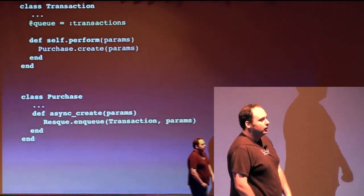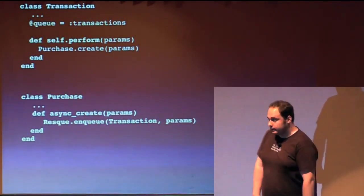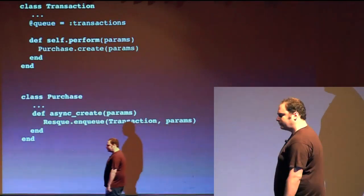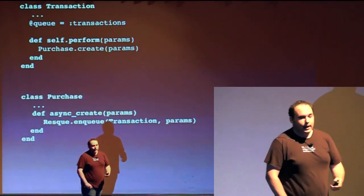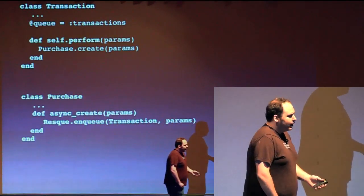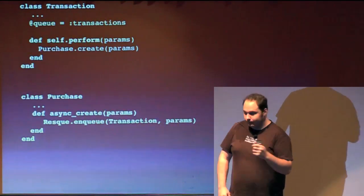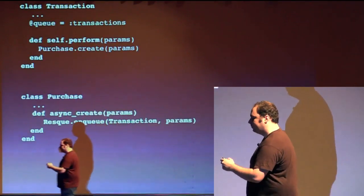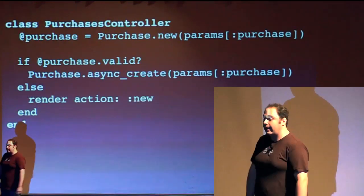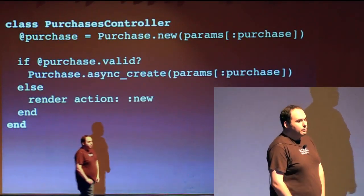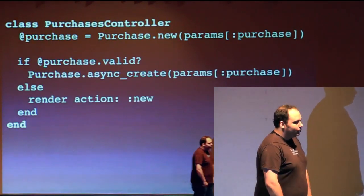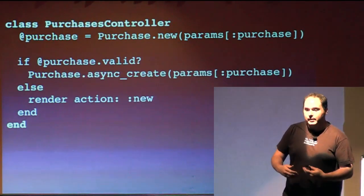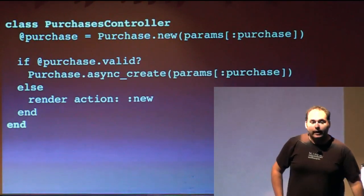We're looking at an example of a model that has an asynchronous create that we can start to enqueue things into and run jobs on top of. In our transaction, we specify the queue we want. And we have a self.perform method that the worker will actually run and do what we wanted to do. In our model, I've added an async create method. All of a sudden, our controller looks like this now. We're creating our object in memory, but we're not actually saving it. We make sure it's a valid object. Now we pass it off to Redis. We say async create. And now we will enqueue that.